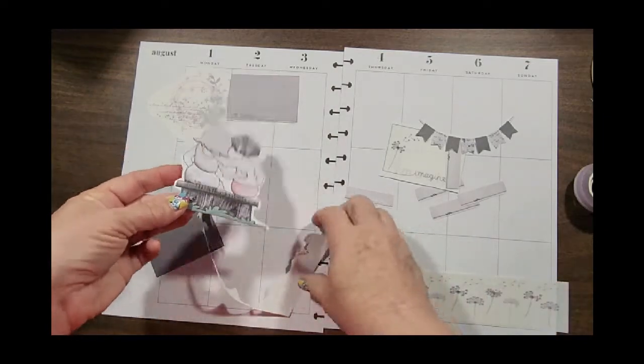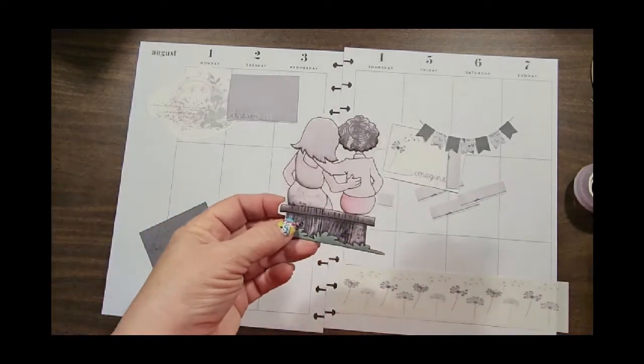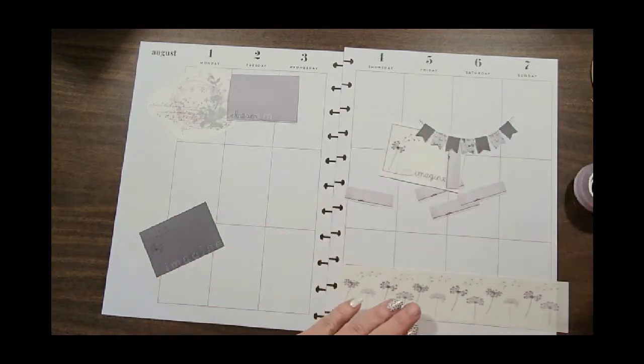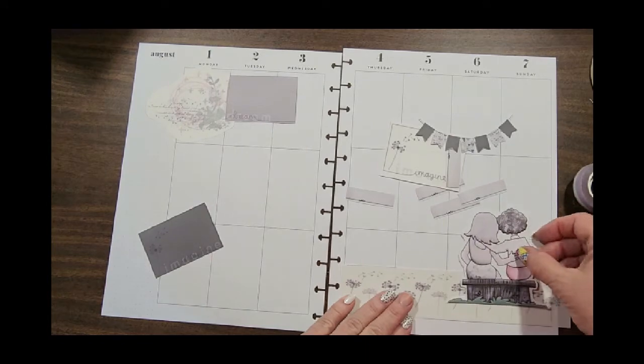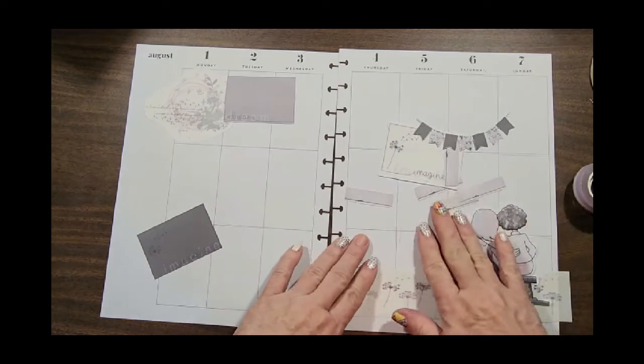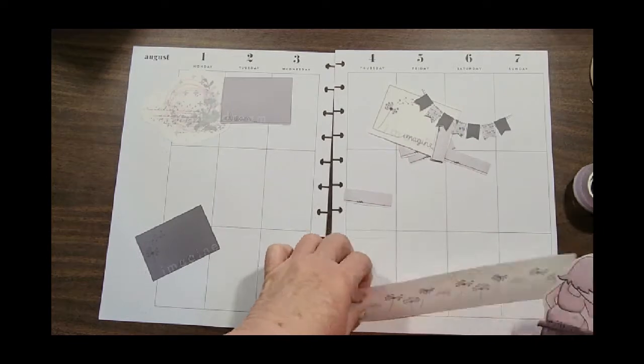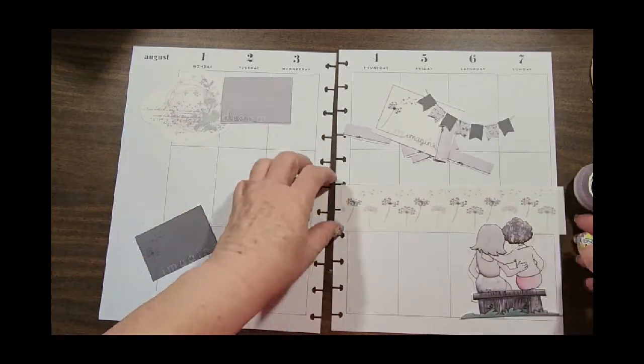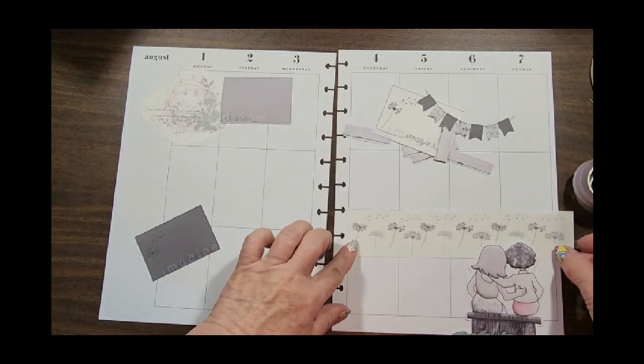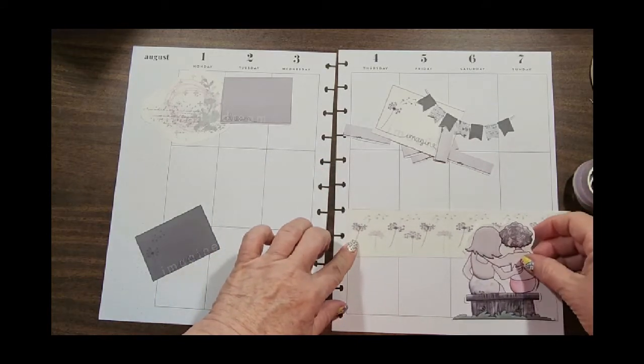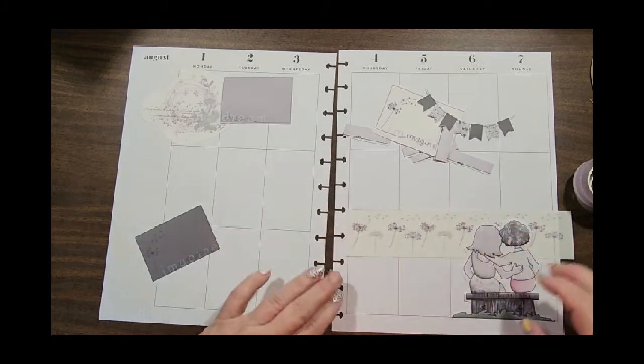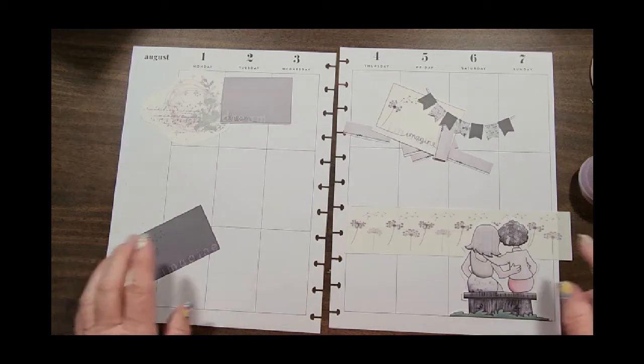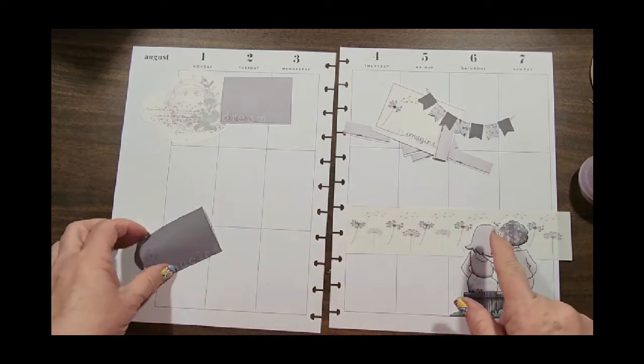Now the blue one is two boys sitting on like the dock going fishing. So I was thinking maybe here, or maybe even they're watching the dandelions. Moving that down a little bit. It's kind of wide, but I tried to make it narrower and the dandelions just didn't look right.